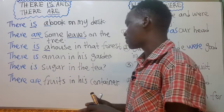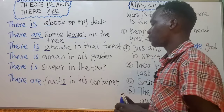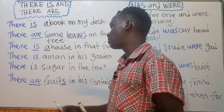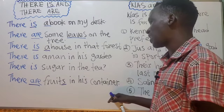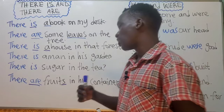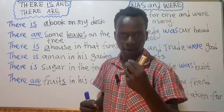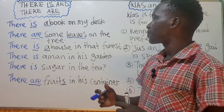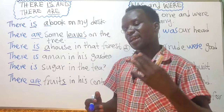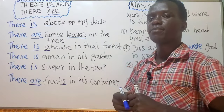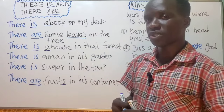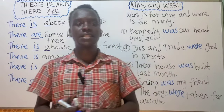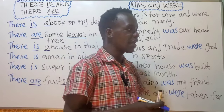'There are fruits in his container' — this is plural because of the 's' behind 'fruit.' The 's' makes it plural, so we use 'there are.' Your job is to identify whether what you want to talk about is plural or singular, and then use 'there is' or 'there are' accordingly. If you understood, remember to subscribe, like, and share. If you didn't understand, write in the comments below and I'll answer your question.